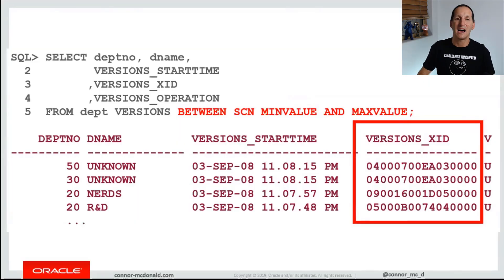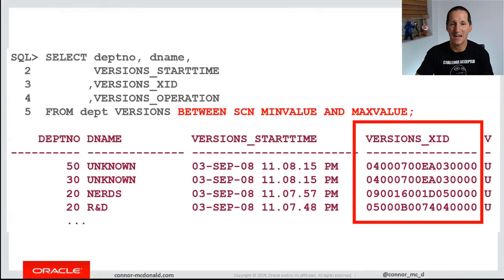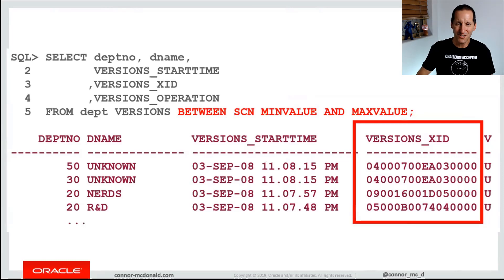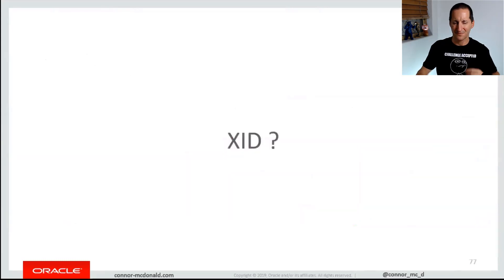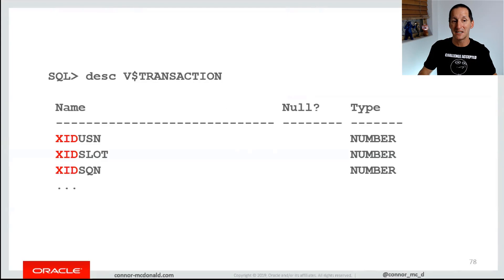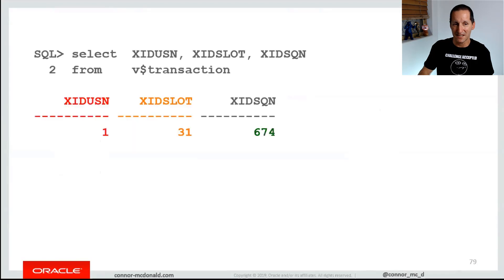Flashback query lets you have these flashback row versions options, and one of the columns in there is versions XID. XID is a term you may have seen floating around somewhere in the database. I've seen it in V$ULULA transaction, where there are three columns that have XID as a prefix.